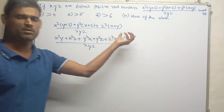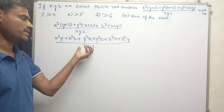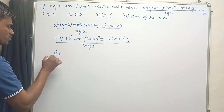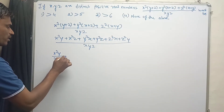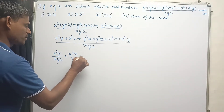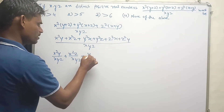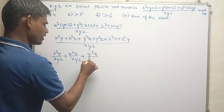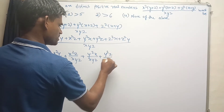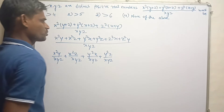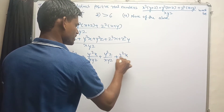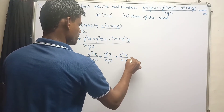Now let's divide each term by xyz. We have x²y over xyz, plus x²z over xyz, plus y²x over xyz, plus y²z over xyz, plus z²x over xyz, plus z²y over xyz.